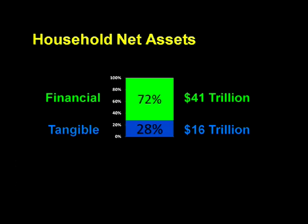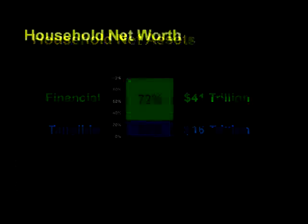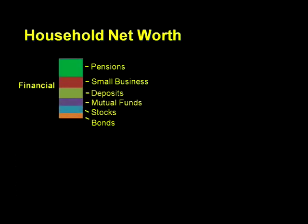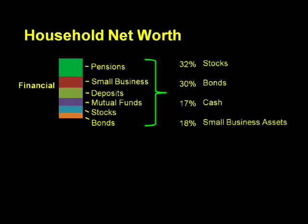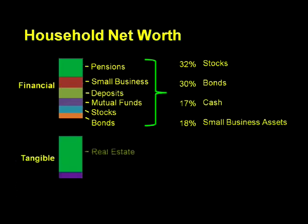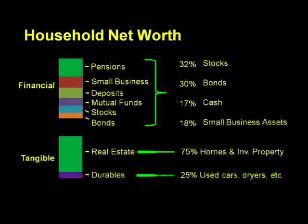If we examine these assets a little more closely, we see that the $41 trillion worth of financial assets consists of things like pension funds, the assets of privately held businesses, deposits, stocks, and bonds — which we can roughly recompose into four main classes: stocks, bonds, cash or deposits, and the assets of privately held businesses. The other bucket of $16 trillion in tangible assets consists primarily of real estate, which is 75% of this bucket, and consumer durables — your car, your dryer, and your snowblower, if you happen to have one.